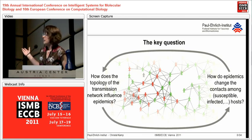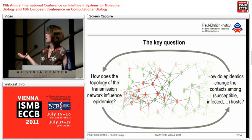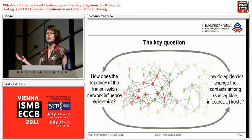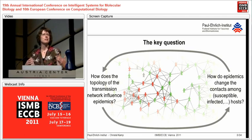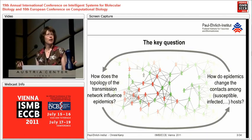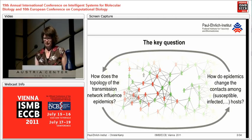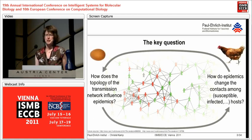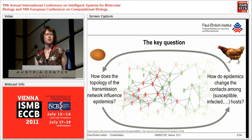The opposite side has been a bit more neglected, because not only does the network topology affect epidemic spread, but also the epidemic affects how contacts are made or maintained between susceptible, infected, or recovered individuals. And this is where the chicken and the egg come into the game.